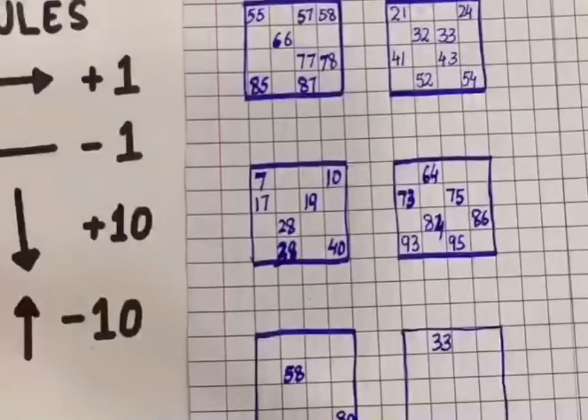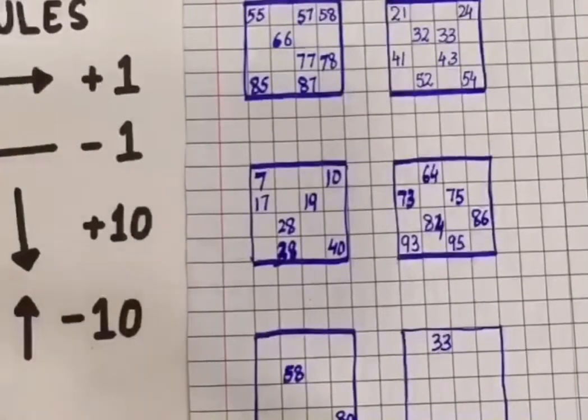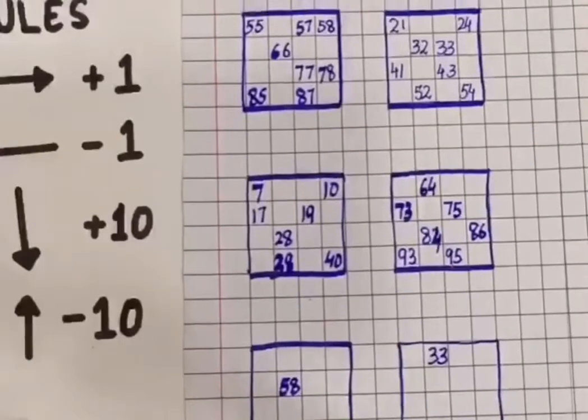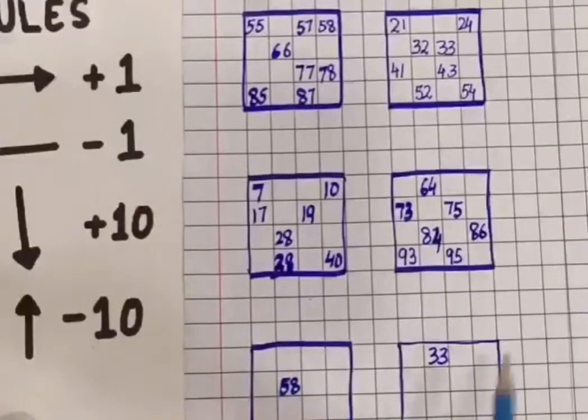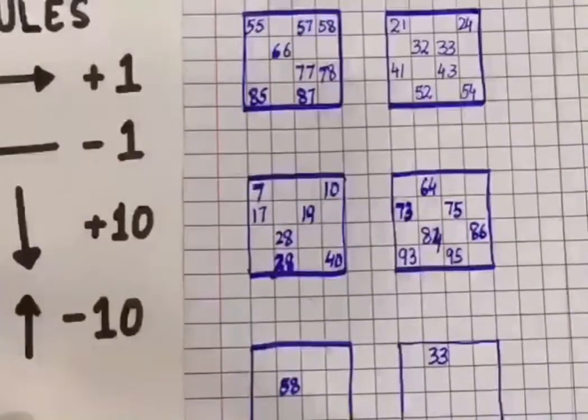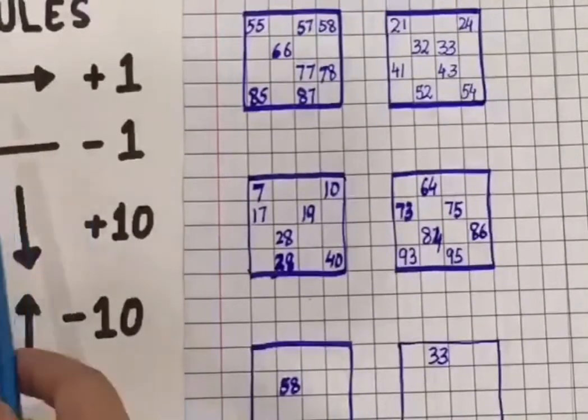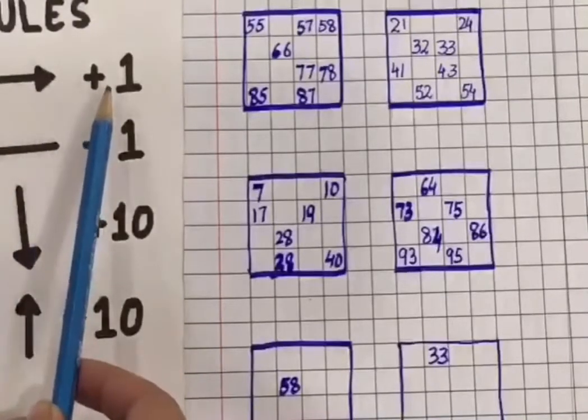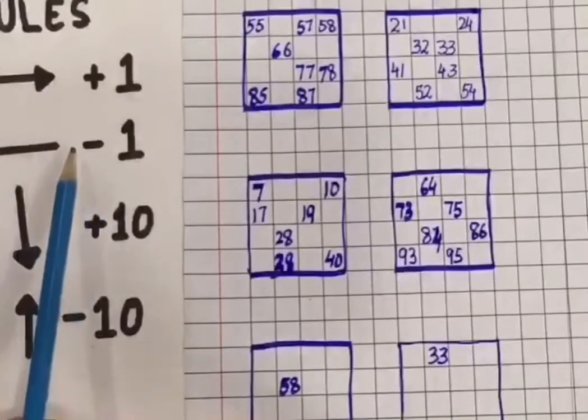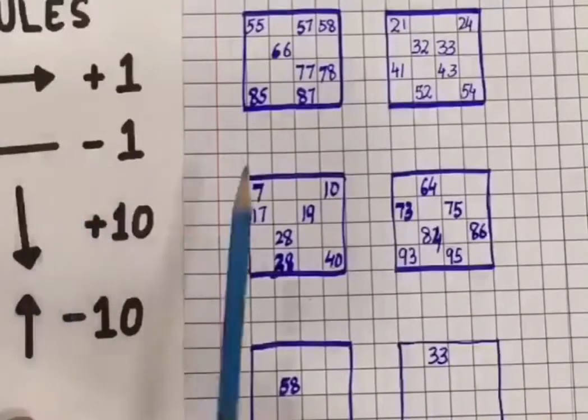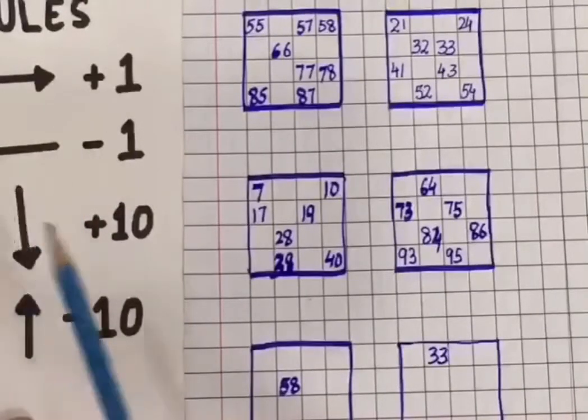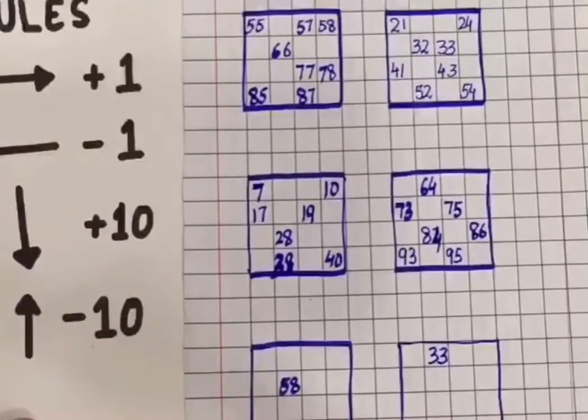Now let's take some examples from the 100 square chart and how we are going to solve it and what sort of questions can come. Now these are some broken sections that are being taken from the 100 square chart and we are going to fill in the missing numbers. First of all, I am going to revise the rules again. If I am moving from left to right, we are going to add 1. If I am moving from right to left, I am going to subtract 1 and if I am moving from top to bottom, I am going to add 10 and if I am moving from bottom to top, I am going to minus 10.